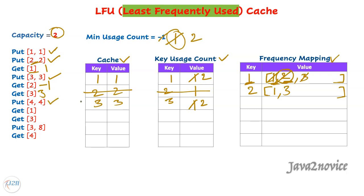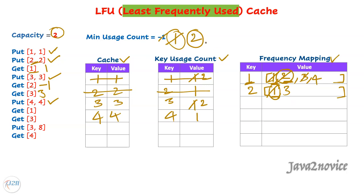The next action is a put call. Since the cache is at maximum capacity, we must evict one element before inserting another. The least frequently used key count is two, but there are two keys in this count — so we must find the least recently used key from this list. The linked list head carries the least recently used key — here key one is at the head, so we remove it, delete its entries, then insert new element four with usage count one. Key four goes into the count-one list. We update the least frequently accessed count back to one.